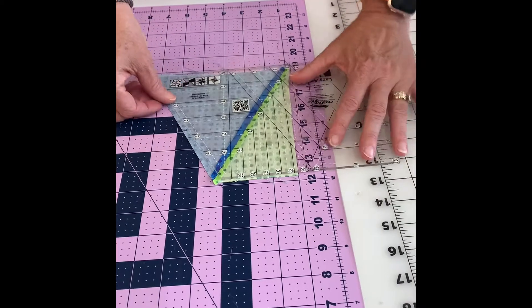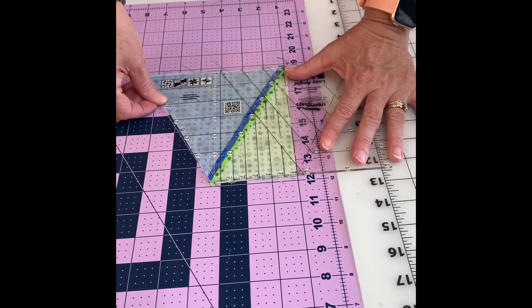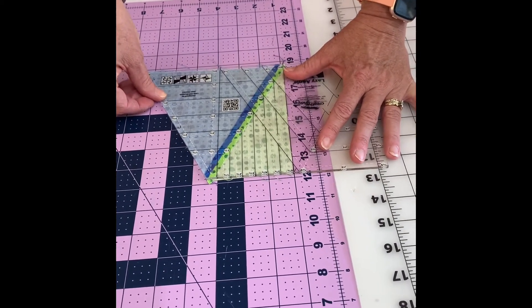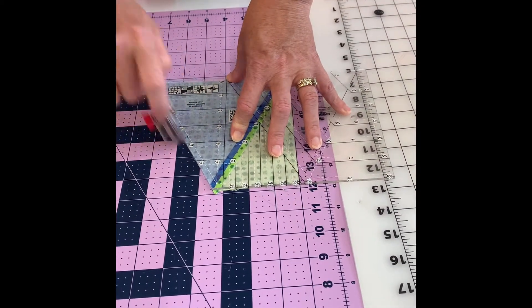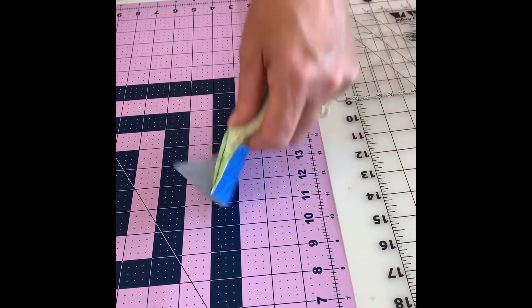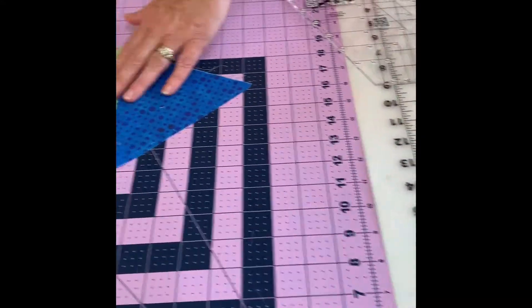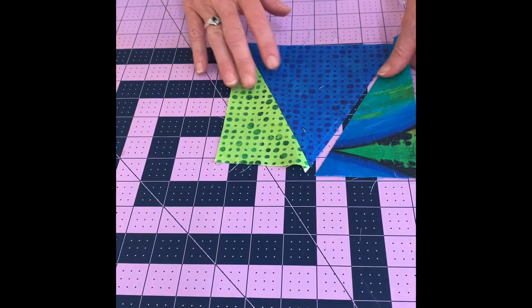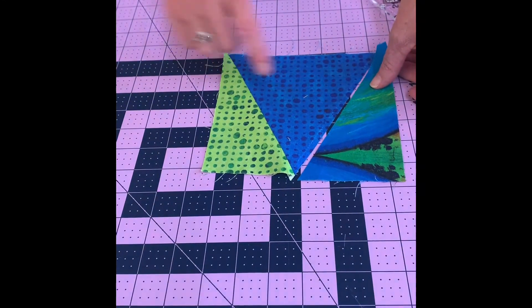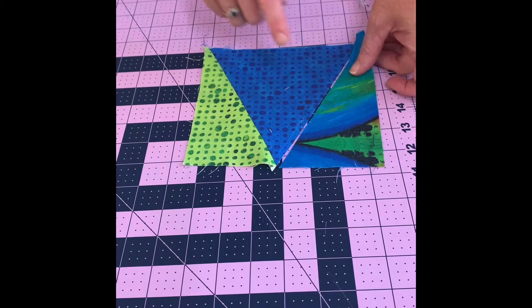So once I put my ruler over here, I'm at a six and a half inch strip. So I go to the six and a half inch and then I use my cutter and there's, now I have a left B. So you need now fabric two, according to the pattern.